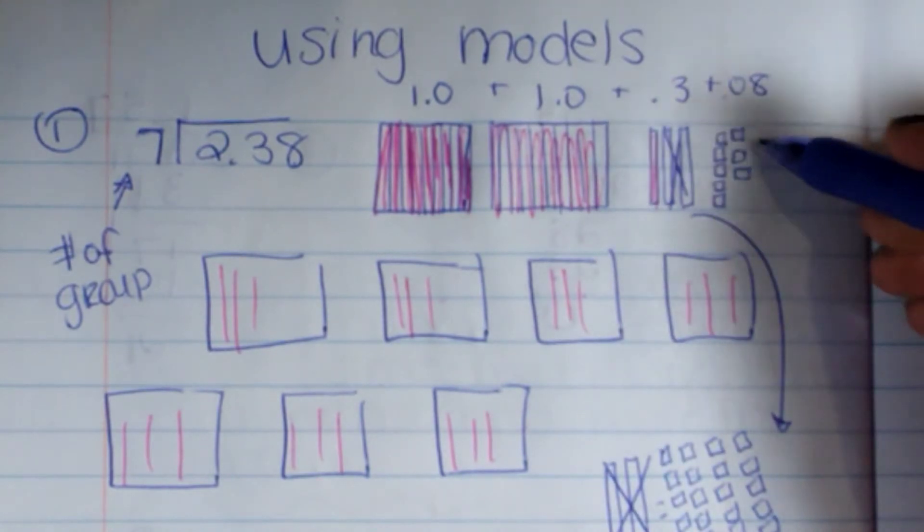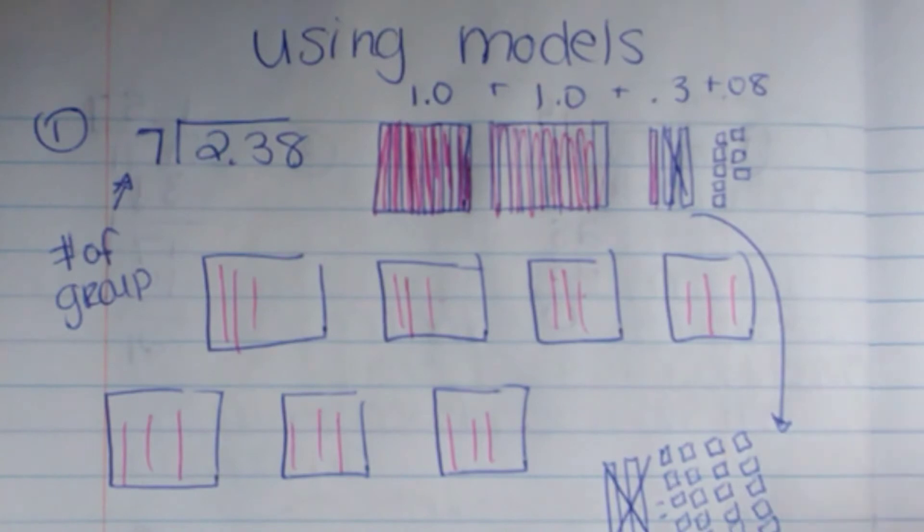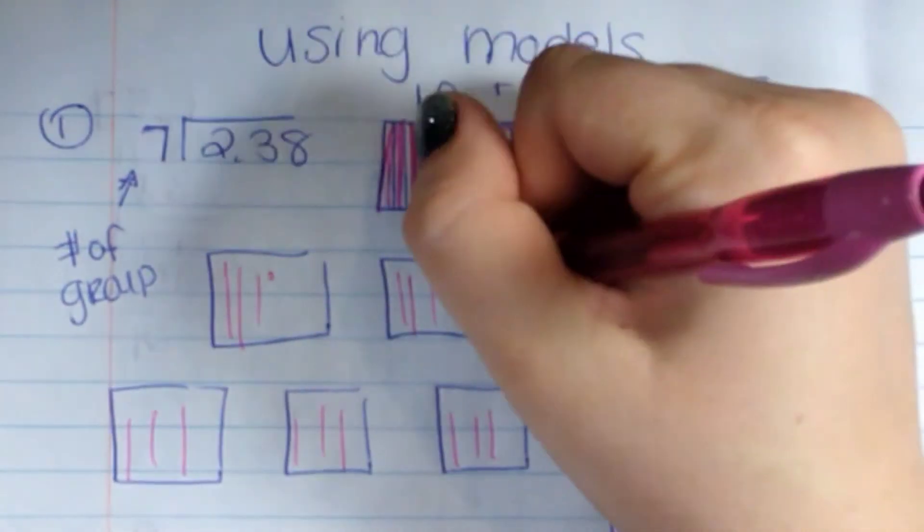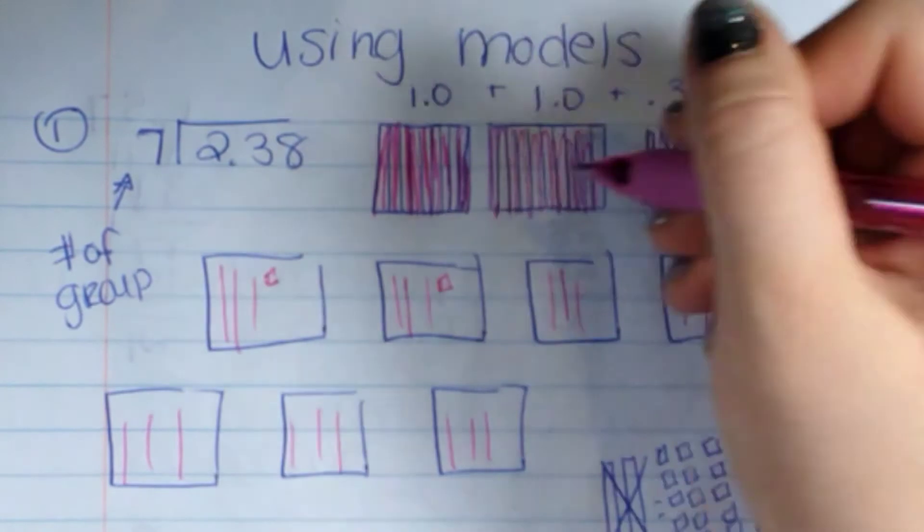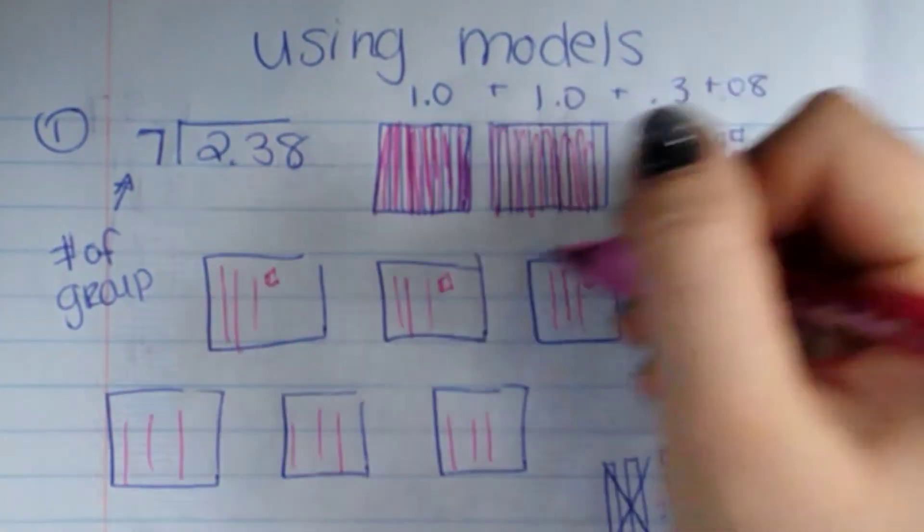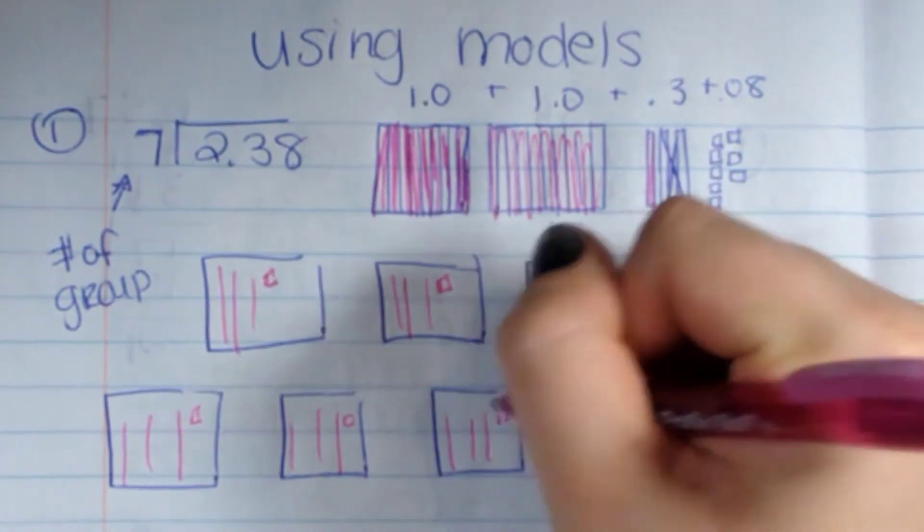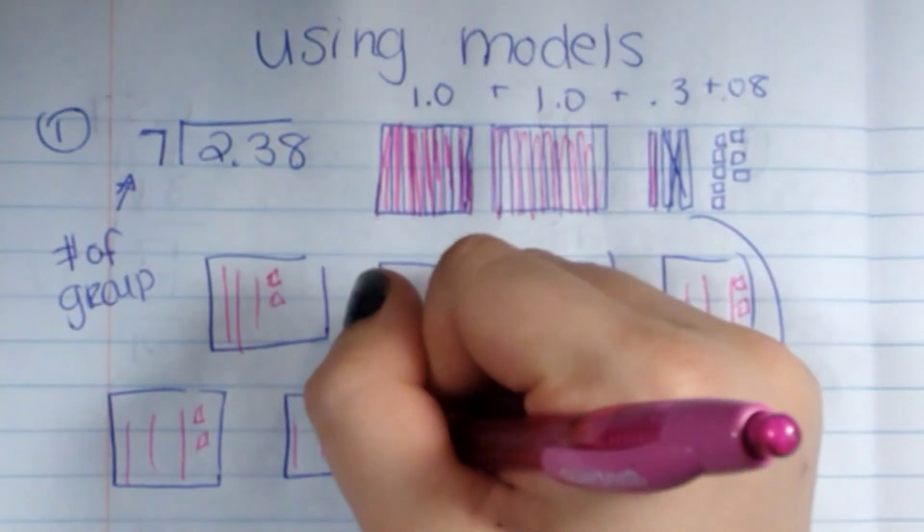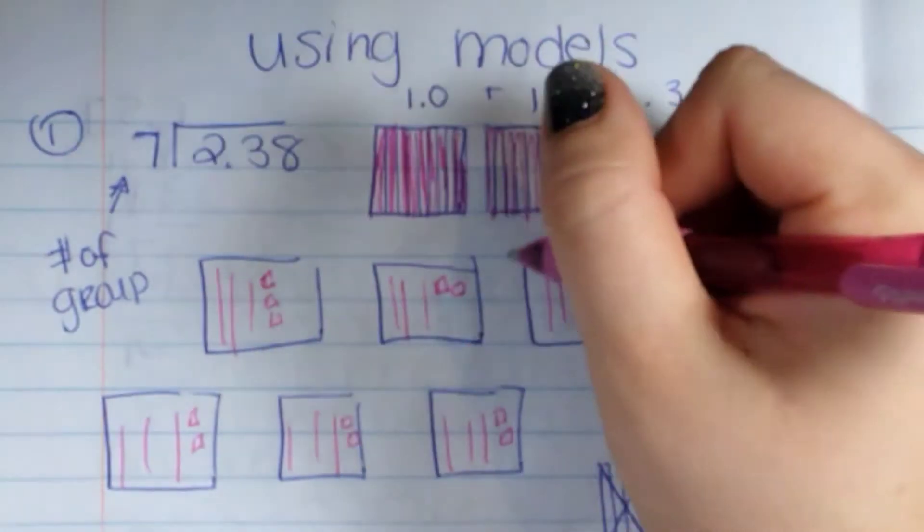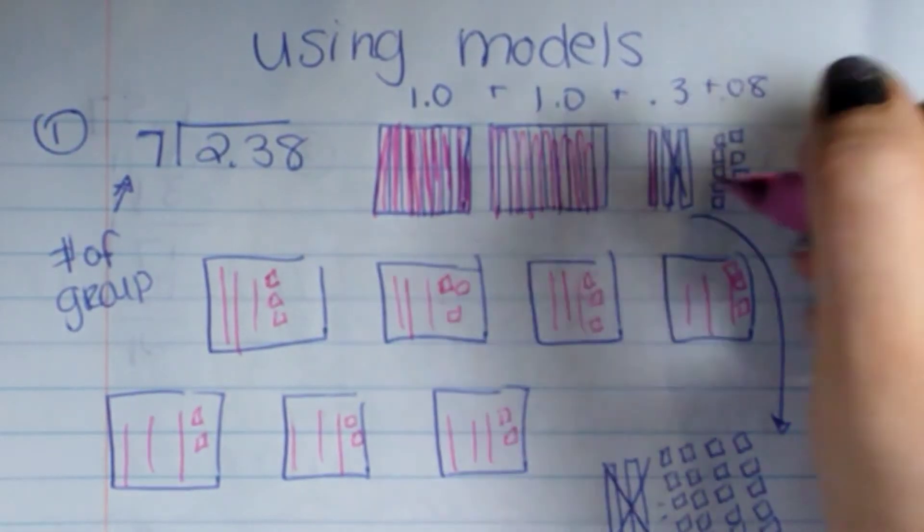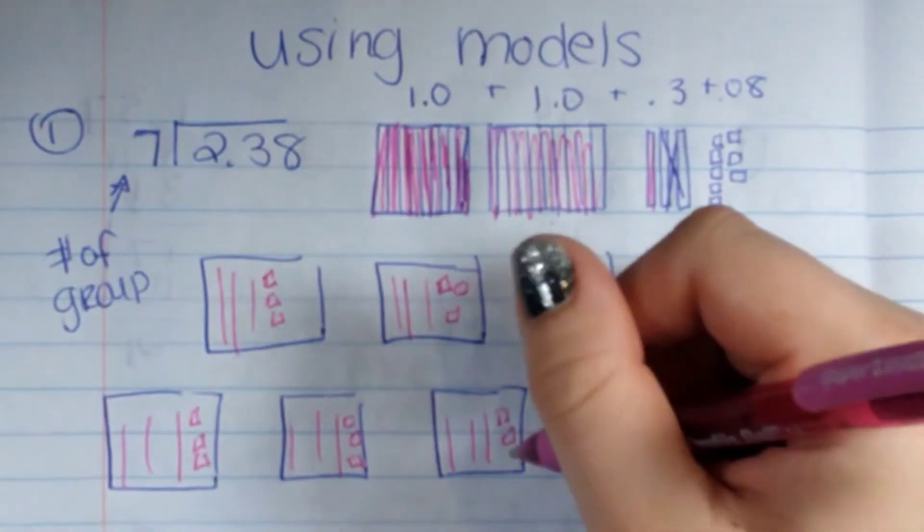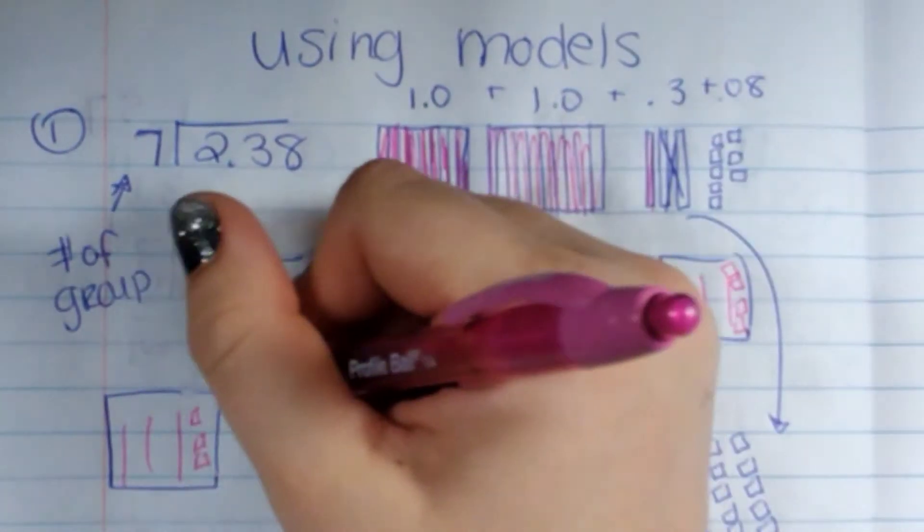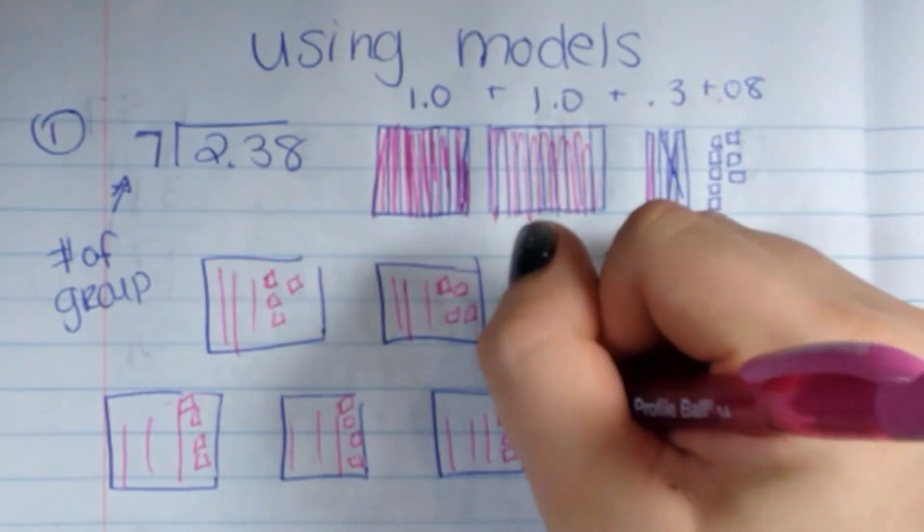And then I also have these extra eight. So I'm going to go through here and I'm going to add. I have 28 basically, so 20 here and eight here. I'm just going to do boxes until I get rid of all my 28s. So that's three, four, five, six, seven... through twenty-eight.